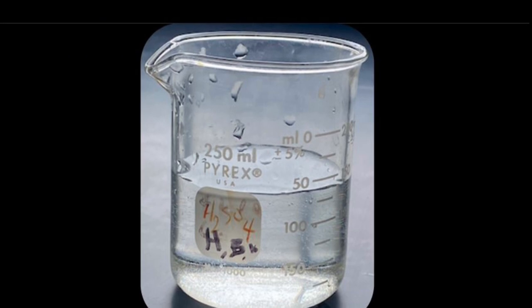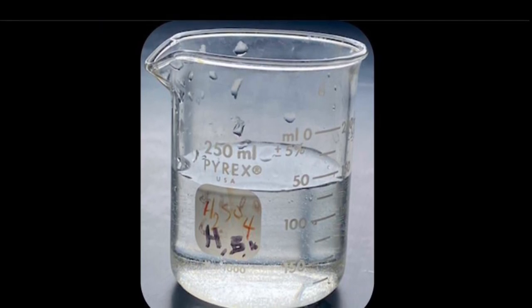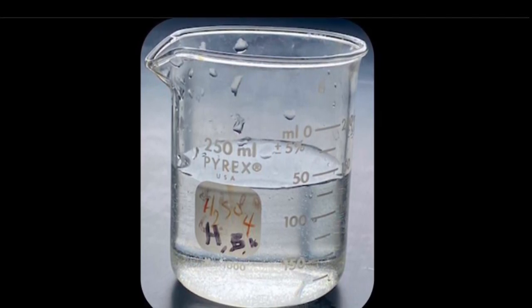I'm going to be talking about the information you need to know before using a beaker. A beaker is a piece of glassware used in a lab setting. Its purposes include measuring, heating, and stirring elements.